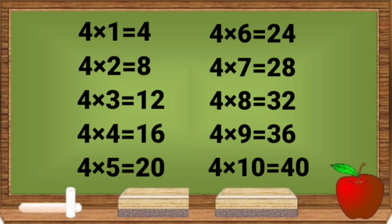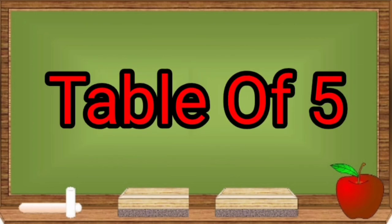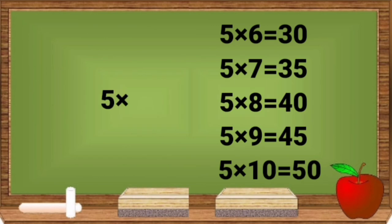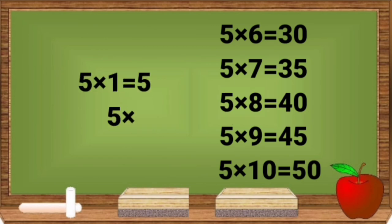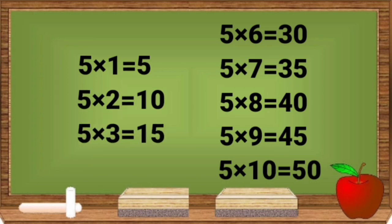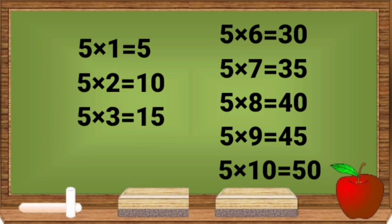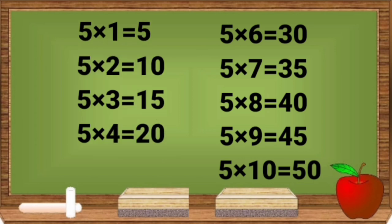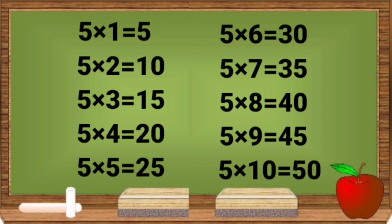5 ones are 5. 5 twos are 10. 5 threes are 15. 5 fours are 20. 5 fives are 25.